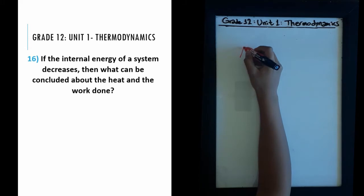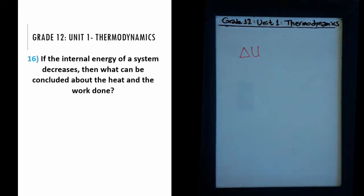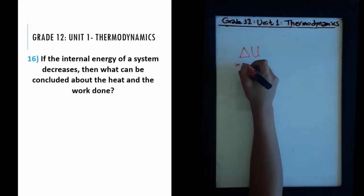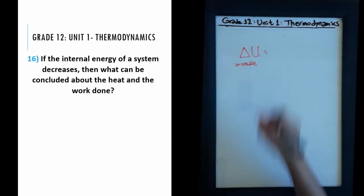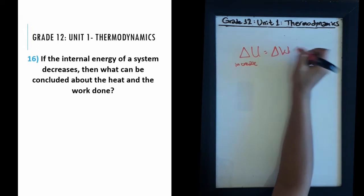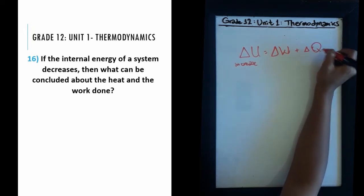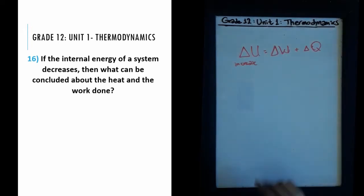The internal energy, which you represent by U, has a specific formula. This formula has to do with the increase in internal energy. The increase in internal energy is represented by the following formula: ΔW plus ΔQ. So what do these two things mean?